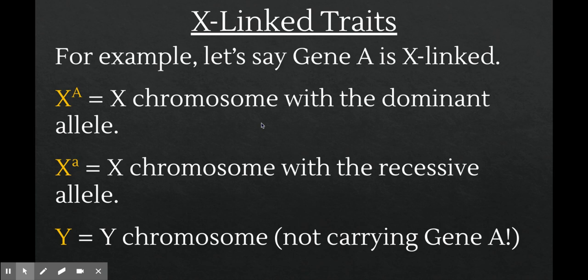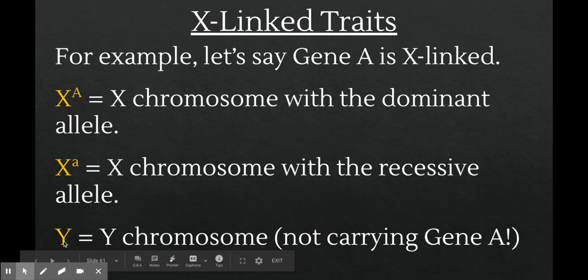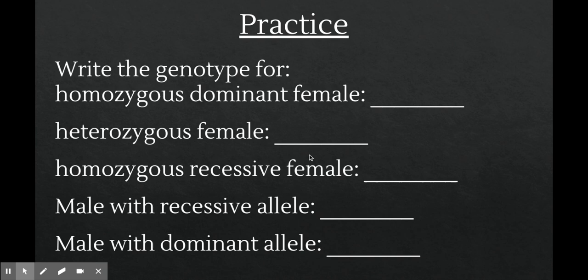Let's imagine a gene that has a dominant and recessive form, but the gene is on the X chromosome — it's X-linked. Now suddenly, even with that small variation, things got a lot more complicated. Instead of just having dominant and recessive alleles, we have X chromosomes carrying the dominant allele, X chromosomes carrying the recessive allele, and Y chromosomes that don't carry an allele for that gene at all.